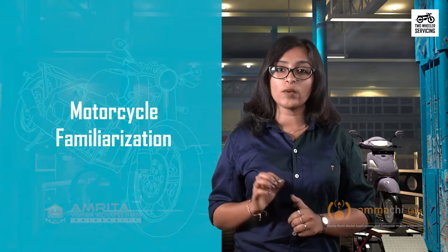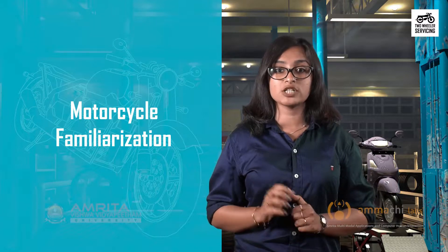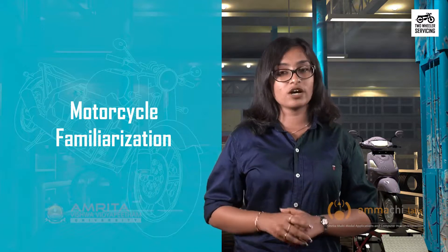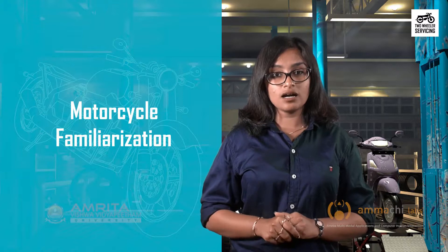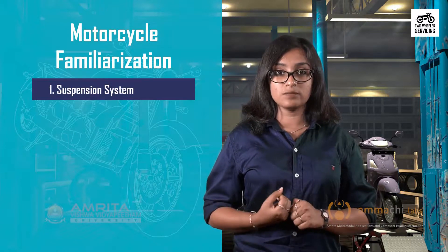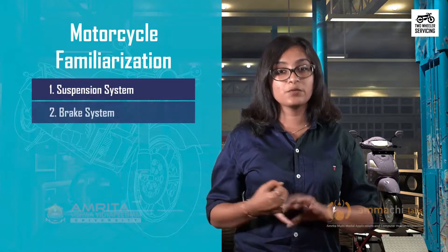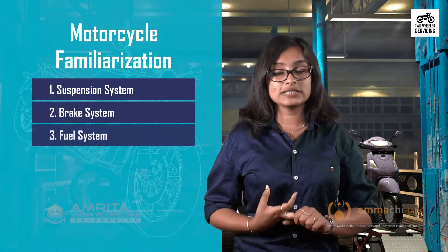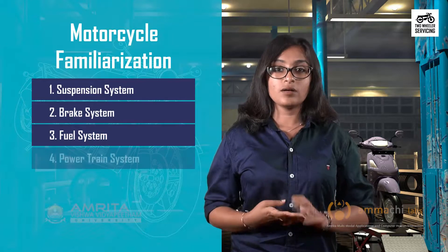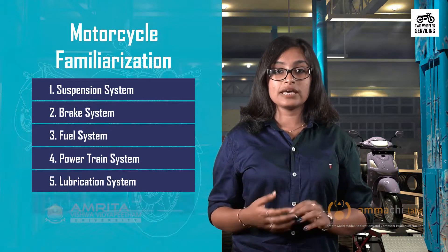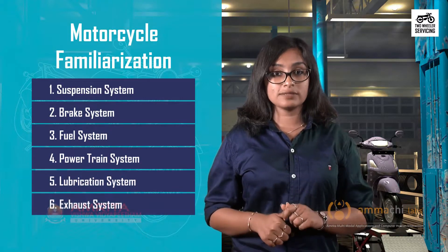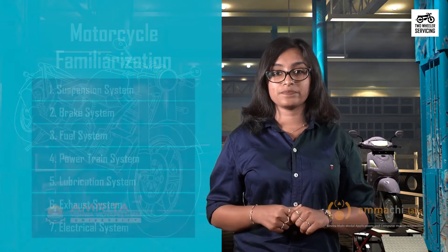With that we have come to the end of the session. In this session we learned to identify the parts associated with the various systems in a two-wheeler and describe their functions. The systems covered are: suspension system, brake system, fuel system, powertrain system, lubrication system, exhaust system, and the electrical system. Thank you.